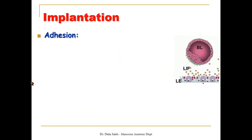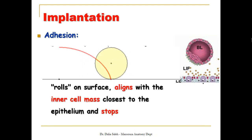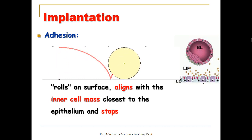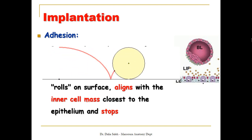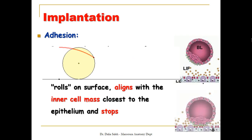For adhesion: here you can see the endometrial lining of the uterus, the blastula with its trophoplastic layer and inner cell mass, and the blastocyst cavity. Adhesion begins with the initial contact of the blastocyst to the endometrium. The blastula is like a ball — it rolls on the surface of the endometrium and gradually slows in its motility until it stops completely. The inner cell mass, being the heaviest point, aligns with the surface of the endometrium.